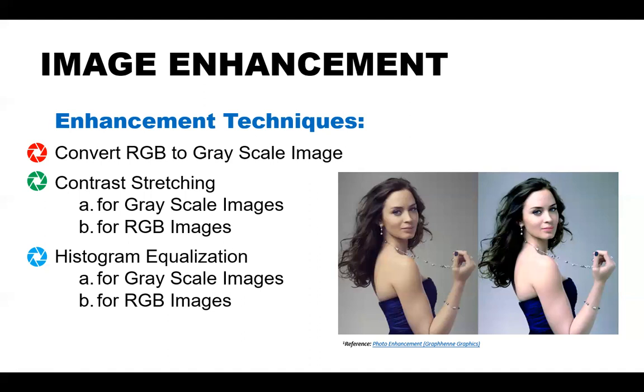For image enhancement, I have prepared three subcategories or examples, which are: first, converting RGB image to grayscale; second, contrast stretching for grayscale and RGB images—RGB means red, green, and blue image, or what is known to be colored images; and lastly, histogram equalization for grayscale and RGB images.